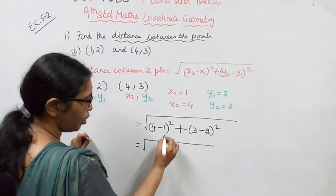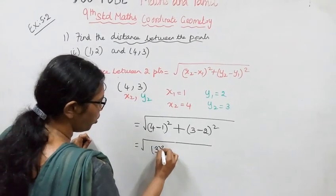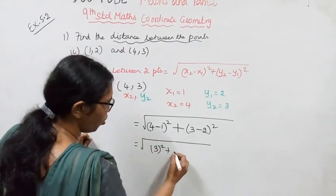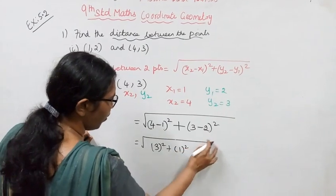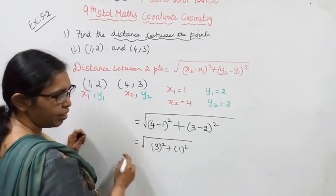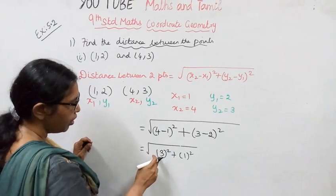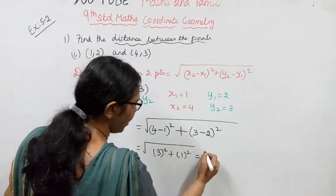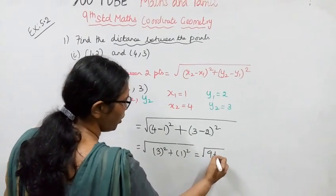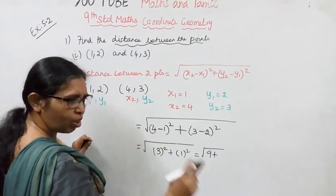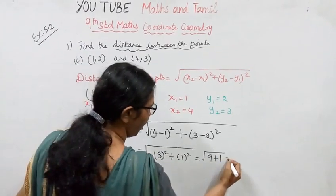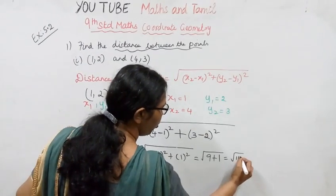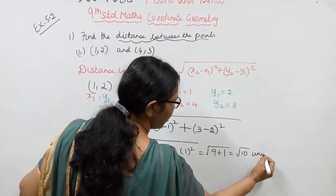4 minus 1 is 3, the whole square is 3 into 3 which is 9. 3 minus 2 is 1, 1 square is 1 into 1 which is 1. Therefore, that is equal to root 10 units.